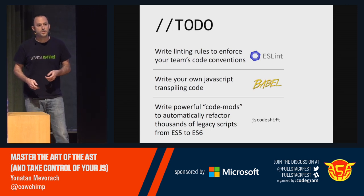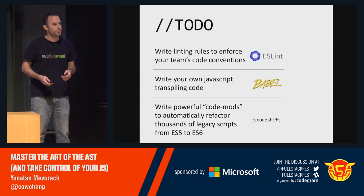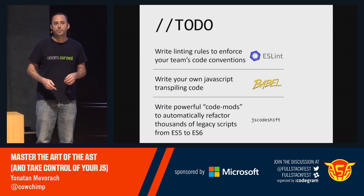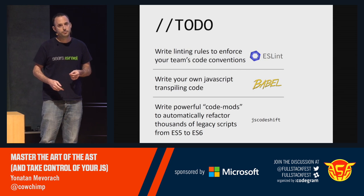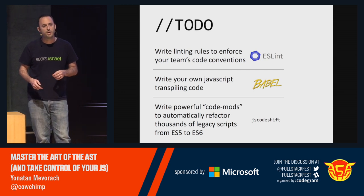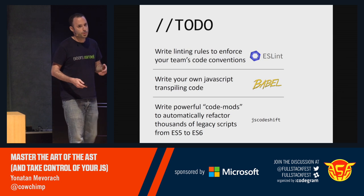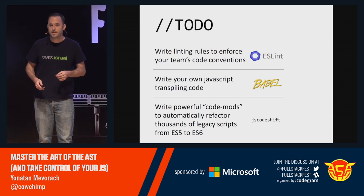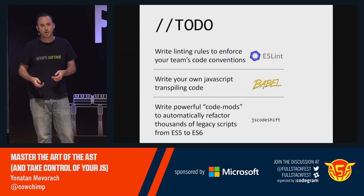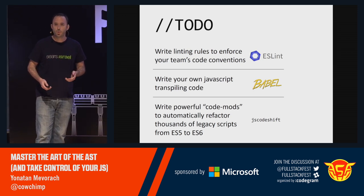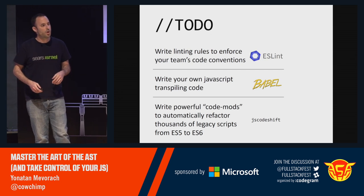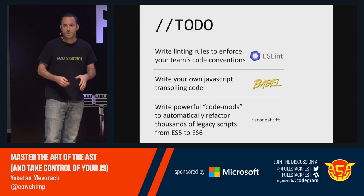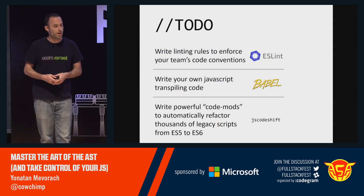These are the three tools that solve these problems today in the JavaScript ecosystem. You have ESLint as a linter, Babel as a transpiler, and Facebook's JS CodeShift as a codemod runner. What's unique about these three tools is that they were all developed with this idea of a plugin-based architecture, meaning the original tool creators went to a lot of trouble to let you extend these tools and give them new capabilities without having to understand exactly all of the internals of how they work.